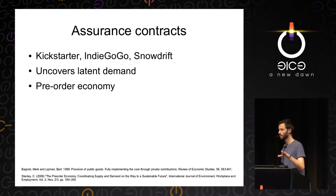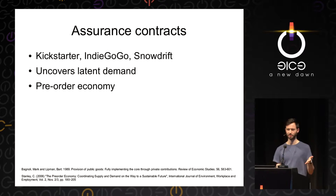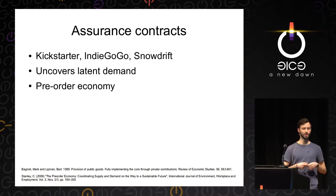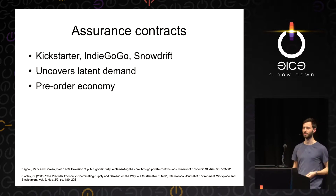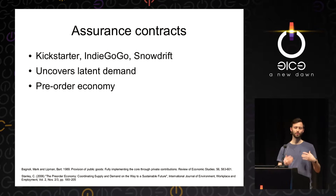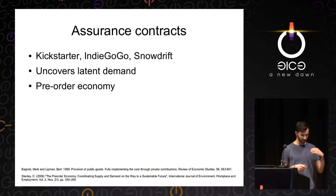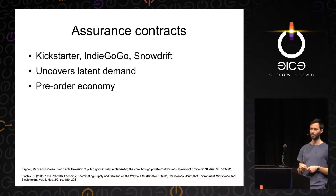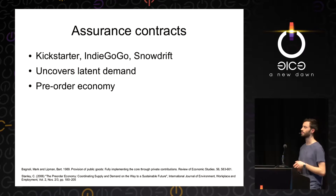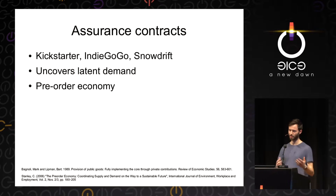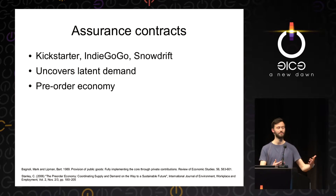The final idea worth looking at is assurance contracts — the technical term economists use for a Kickstarter-style pledge system. The idea is that you get lots of people to pledge that if enough others do so, they will put their money into a project. Before you even go into production, you have proven demand. It's a way of uncovering latent demand that might not otherwise be revealed through purchases. Some people advocate moving towards this model widely, calling it the pre-order economy.